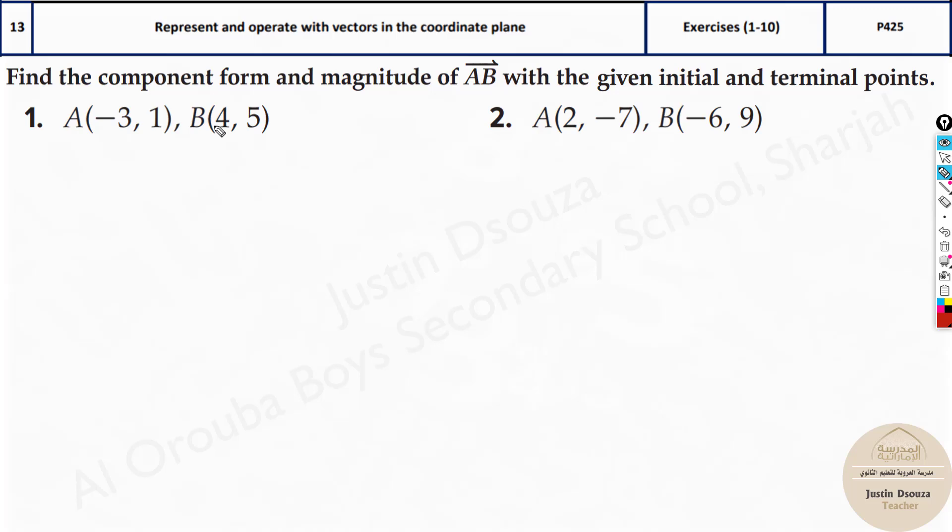How do I know this is initial and this is final? Because I have clearly mentioned over here A to B. Now the first one will be the initial.